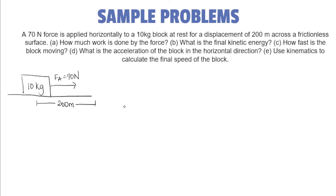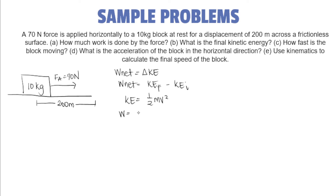The first unknown is how much work is done by the force. So to find all our unknowns, let us first write down our derived equations from our previous discussion. So we have net work is equals to delta KE, which is KE final minus KE initial. We also have the equation for kinetic energy, which is one-half mv squared. And also for work, F times d times cosine theta.